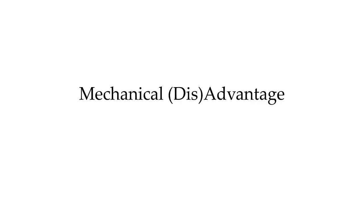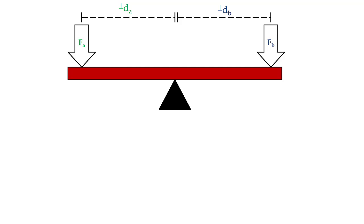Let's talk about mechanical advantages or mechanical disadvantages. Going back to our seesaw analogy, we are going to examine two forces, one on either side of our pivot point. Those forces are going to be some perpendicular distance away from our axis of rotation or our pivot point.